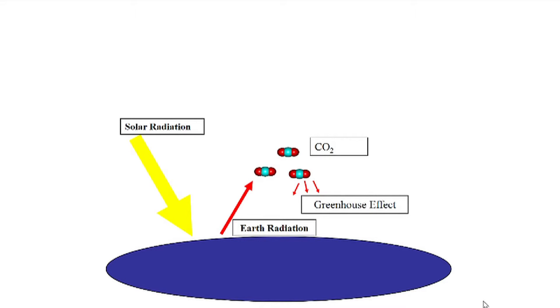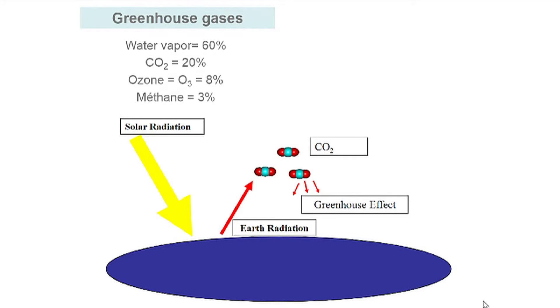The greenhouse effect is the vibration of certain molecules that absorb infrared radiation reflected by the Earth. This generates heat, and that's very good for our planet. But the exaggeration of this phenomenon contributes to global warming. Greenhouse gases therefore affect the climate, although they are not necessarily pollutants. Take, for instance, the CO2 emitted by cars and much talked about these days — that CO2 affects the climate, but it's not in itself an air pollutant.